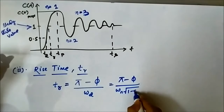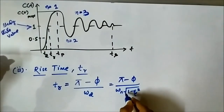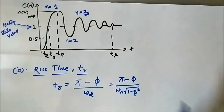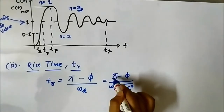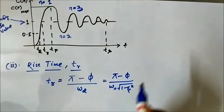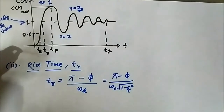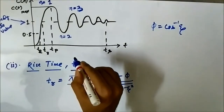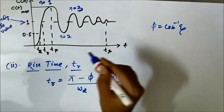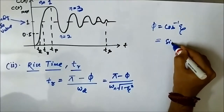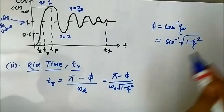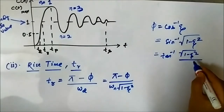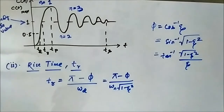The damped frequency ωd equals ωn × √(1 − ζ²). The angle φ, which we calculated from the damping ratio triangle, can be written as cos⁻¹(ζ), or equivalently as sin⁻¹(√(1 − ζ²)), or as tan⁻¹(√(1 − ζ²) / ζ). You can use whichever form is easiest for you to remember.